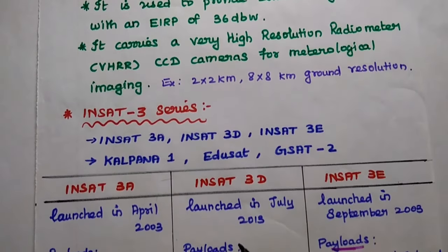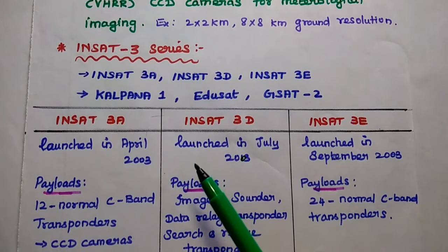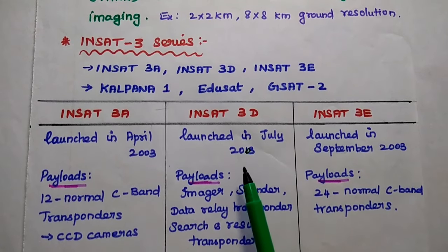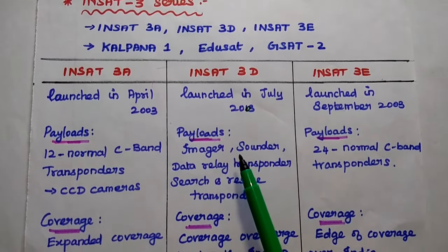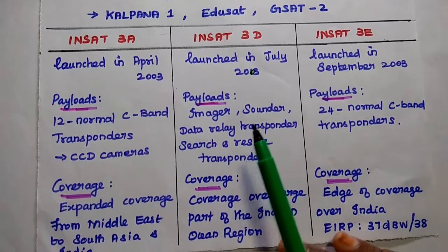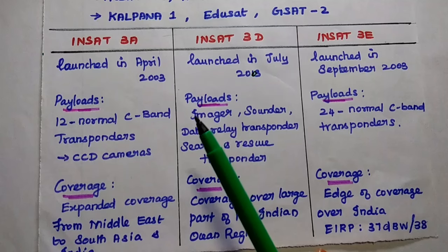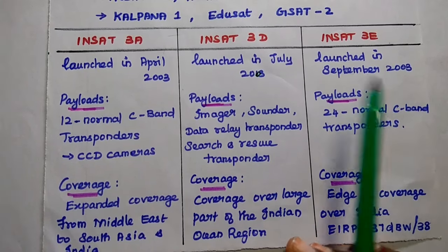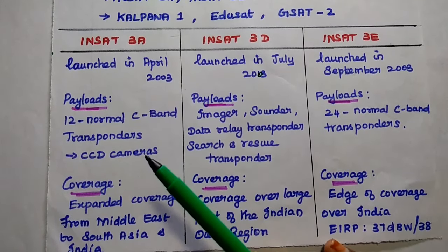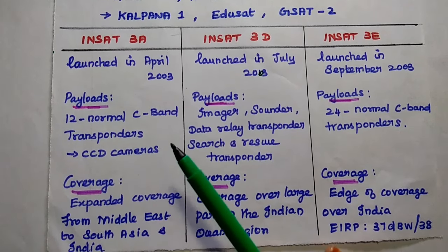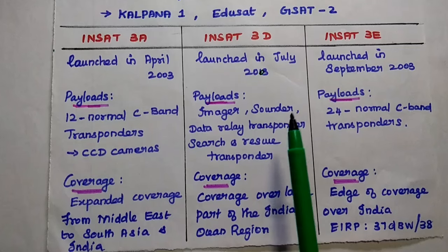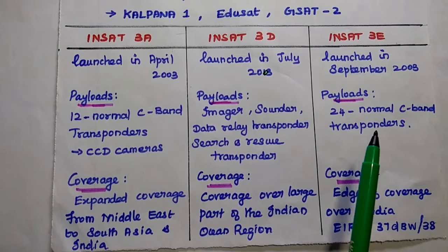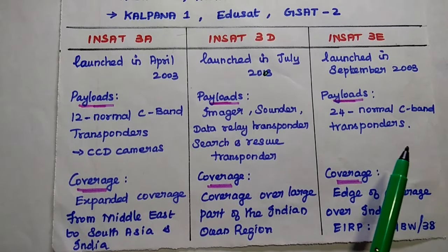The next important one is the INSAT-3 series, with types including 3C, 3D, 3E, Kalpana-1, EDUSAT, and GSAT-2. In comparison: INSAT-3C was launched in April 2003, INSAT-3D in July 2003, and INSAT-3E in September 2003. INSAT-3C carries 12 normal C-band transponders and CCD cameras. INSAT-3D carries an imager, sounder, data relay transponder, and search and rescue transponder. INSAT-3E carries 24 normal C-band transponders as payload.